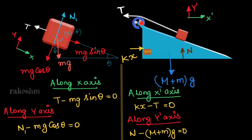For the wedge plus block along x-axis, the two forces acting are spring force kx and tension T. We can write kx minus T equals to 0. Along y-axis, normal and gravitational force are acting, so N minus capital M plus small m into g equals to 0.